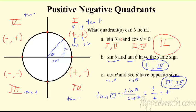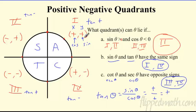A nice shortcut for remembering which functions are positive: All Students Take Calculus — one letter per quadrant going counterclockwise from quadrant one. A: All trig functions are positive in quadrant one. S: Only Sine is positive in quadrant two. T: Only Tangent is positive in quadrant three. C: Only Cosine is positive in quadrant four. This tells you all the positive ones.